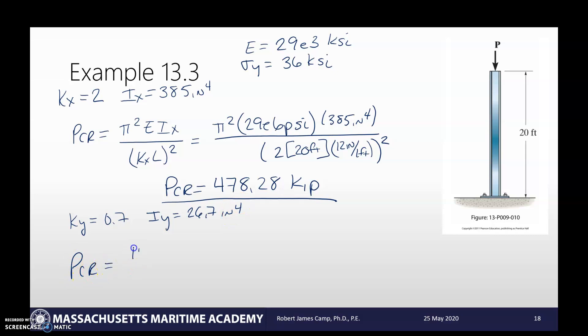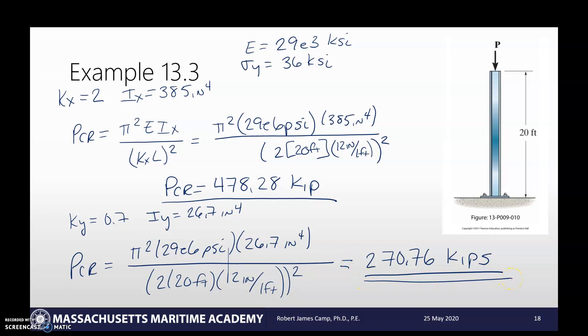And so then Iy is 26.7 inches to the fourth. We solve our critical stress. Pi squared. It's the same equation. I'm not going to write it over. I'm just going to write the numbers in. 29E6 PSI. It's the weaker axis. So 26.7 inches to the fourth. And then we're going to divide it by the same thing. Two times 20 feet times 12 feet, not 12 feet, 12 inches is one foot. So that way our units cancel out correctly square it. And so if I multiply that together, it's going to take 270,076 or 270.76 kips force. So it will never buckle in the X direction because it will buckle in the Y direction way before it gets to the X direction.